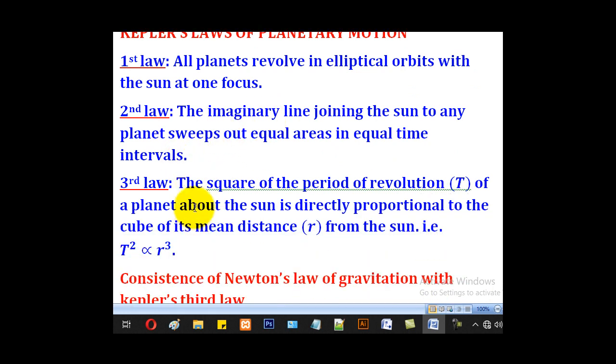It says that the square of the period of rotation T over a planet above the sun is directly proportional to the cube of its mean distance r from the sun, i.e., T squared is proportional to r cubed.